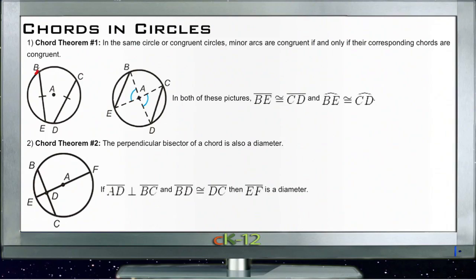So for instance, BE here. B is a point on the circle and E is a point on the circle. The line that connects those two is called a chord.